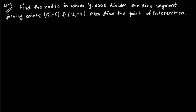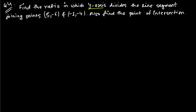Hi friends, here is the fourth type of problem in section formula of coordinate geometry. The question says: find the ratio in which the y-axis divides the line segment joining the points 5, negative 6 and negative 1, negative 4. Also find the point of intersection.